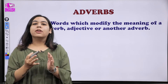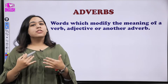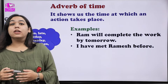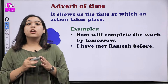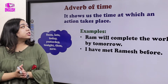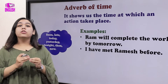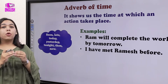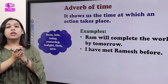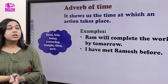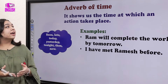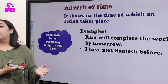Remember it that way — don't just cram it, just understand it. The very first type is adverb of time. It shows us the time at which an action takes place. A verb is an action word, so whenever we are talking about the time of that action, that is the adverb of time.